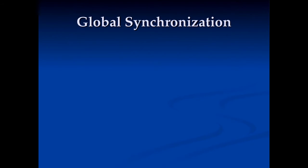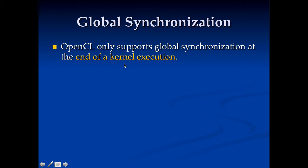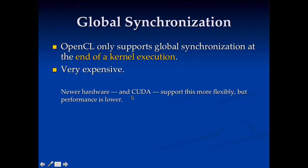So how do you do global synchronization in OpenCL? The answer is you can only do it at the end of a kernel execution. In the reduction example, you use one kernel for the first row and another kernel for the next, and after each kernel you get global synchronization. This is expensive and requires careful algorithm design. CUDA on newer NVIDIA hardware supports more flexible synchronization, but at much lower performance — using it too much hurts performance significantly.